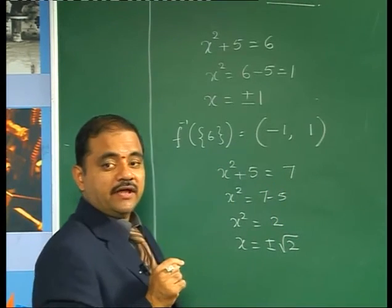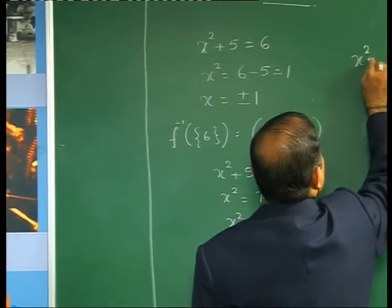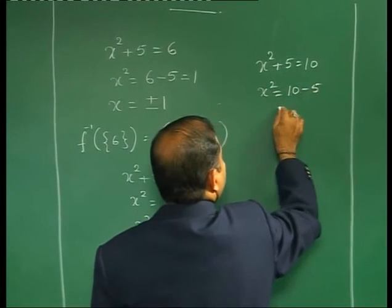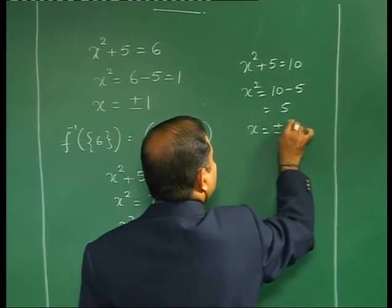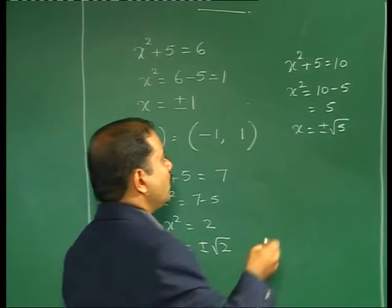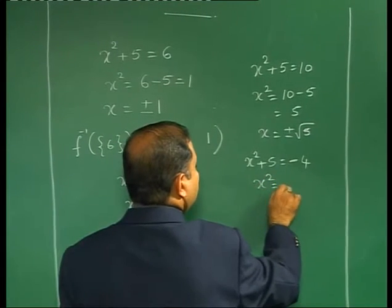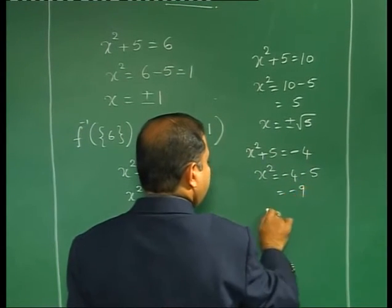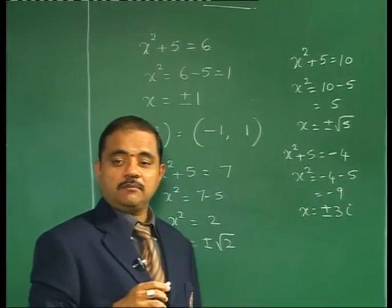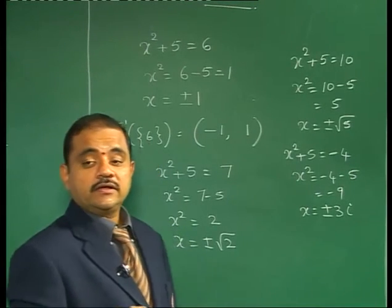For 10: x² + 5 = 10 gives x² = 5, so x = ±√5, also not in Z. For −4: x² + 5 = −4 gives x² = −9, so x = ±3i (complex), which does not occur in Z. For 5: x² + 5 = 5 gives x² = 0, so x = 0, which is in Z.